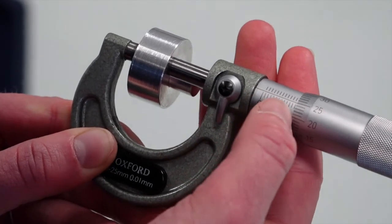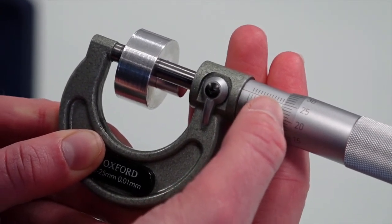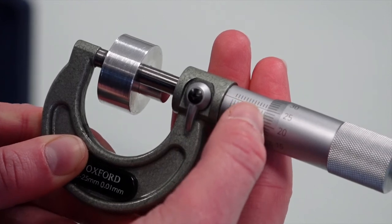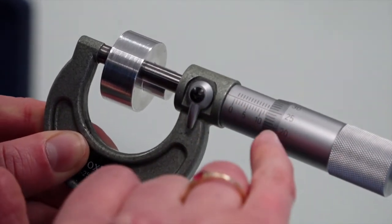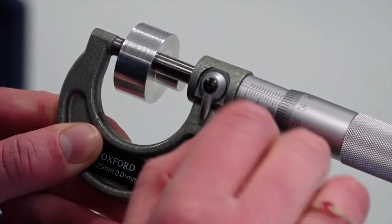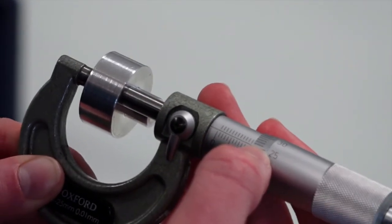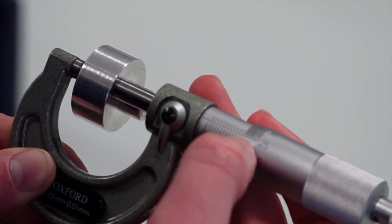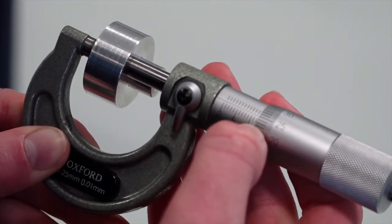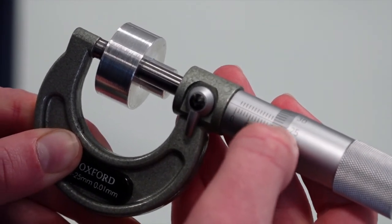On the main scale, the reading is between 12 and 12.5mm. On the rotating scale, it's between 0.25 and 0.26mm. But it's closest to 0.25mm, so the overall reading is 12.25 plus or minus 0.01mm.